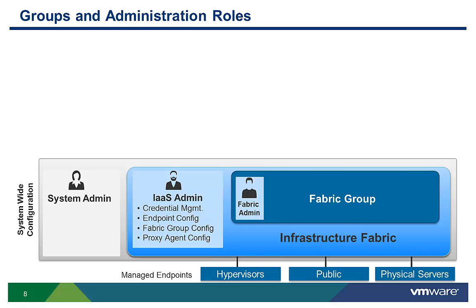Once the infrastructure fabric resources have been discovered, the infrastructure administrator also configures and manages fabric groups. Adding compute resources to a fabric group places them under vCloud Automation Center control. Fabric administrators can also manage the resources in a fabric group, but the scope of their responsibility is limited to just their fabric group.